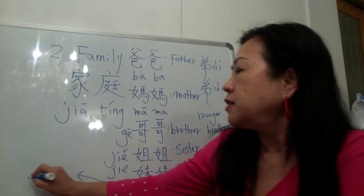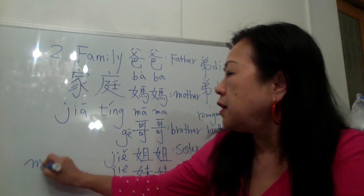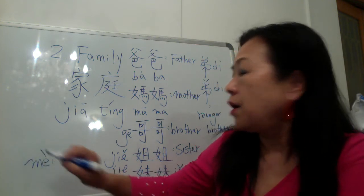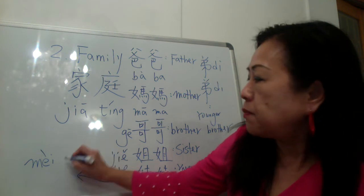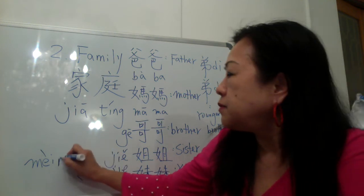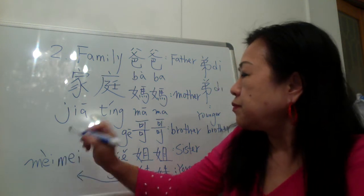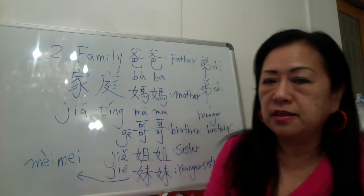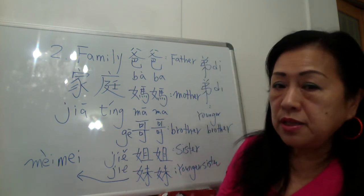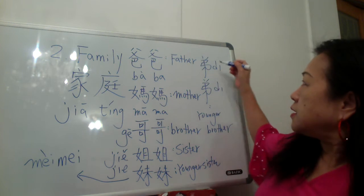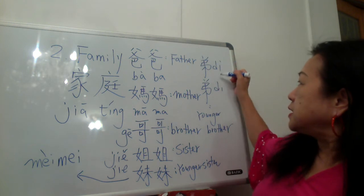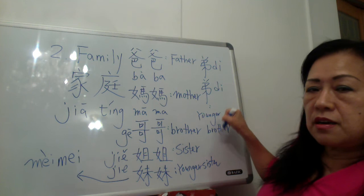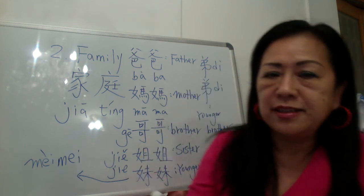妹妹，M-E-I，妹，妹妹 is younger sister. 弟弟 is younger brother. So older brother is 哥哥, younger brother is 弟弟.